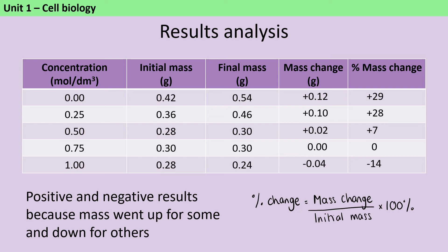So for the first three solutions, they are more dilute than the tissue fluid. And that led water to move into the cells across the partially permeable membrane by osmosis. And then for the final piece of potato, the solution that it was in was more concentrated than the tissue fluid. And so that drew water out of the cells by osmosis across that partially permeable membrane.